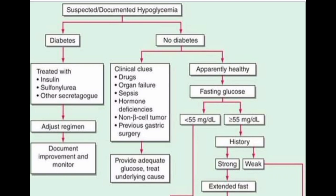First we rule out if the patient is diabetic or non-diabetic. In diabetic patients, because there are high sugar levels, we first need to reduce those levels. Diabetic patients are under treatment with insulin, sulfonylurea, or other drugs which reduce blood sugar levels. We don't need further evaluation in those patients — we just monitor and adjust the treatment.